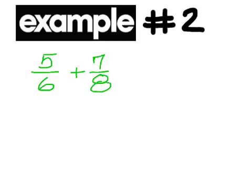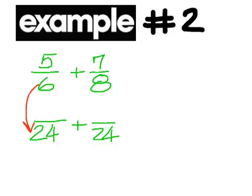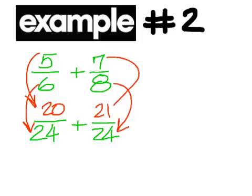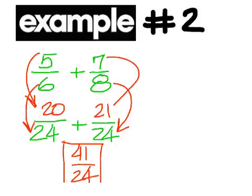Example number two. Five over six plus seven over eight. What is the lowest number that both six and eight will go into? Twenty-four. So I'll put twenty-four down here and here. Now what do I have to multiply six by to get twenty-four? Four. So five times four is twenty. What do I multiply eight by? Three. So seven times three is twenty-one. Now you can add them together. Twenty plus twenty-one is forty-one. And forty-one over twenty-four is the answer.